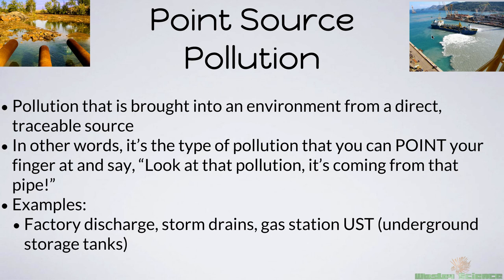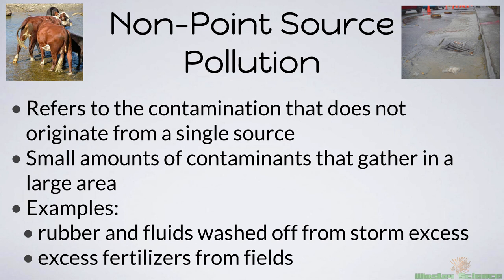Point source pollution is very easy to solve because you can go right to where it's coming from and stop it. Non-point source pollution is a different story — it doesn't originate from a single source, so it's a small amount of contaminants that gather in a large area. Examples are when there's a storm and rubber and fluids are washed up — you don't really know where they came from. Excess fertilizers from fields: when you have many different farms together, you don't know who is using too much fertilizer, so you can't blame one farm over another. That becomes a really big problem because you have no one to blame, so whether it's the EPA or other companies, it's really hard to get money to pay for the cleanup.